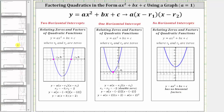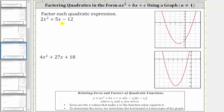Going back to our first example, to factor two x squared plus five x minus 12, we begin by graphing the quadratic function y equals two x squared plus five x minus 12. I've already graphed this on the right, and notice how we have two horizontal intercepts, and therefore we have two distinct zeros. The horizontal intercept on the left is the ordered pair negative four comma zero. However, it's more difficult to determine the horizontal intercept on the right — it looks like it's about 1.5 or three halves, but let's verify this on the TI-84 graphing calculator.